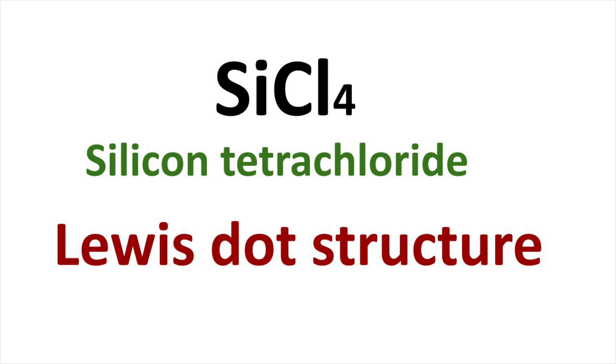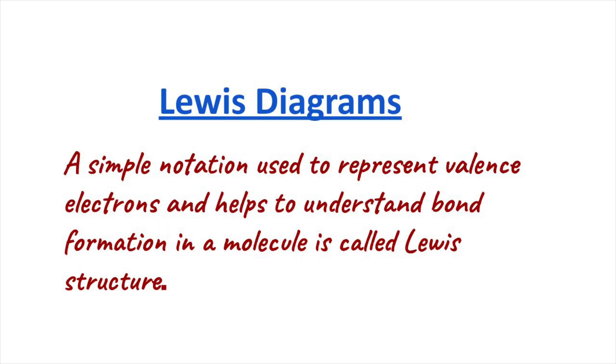Welcome to Aurora chemistry for everyone. Let us see how to write Lewis dot structure of SiCl4, silicon tetrachloride. First, let us see what is Lewis dot structure. A symbolic notation used to represent valence electrons of an atom of a molecule and also provides bonding in a molecule is called Lewis dot structure.